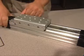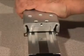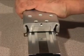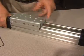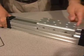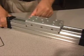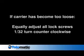The carrier should also be loose enough to be moved by hand over the entire length of the actuator. If after this process the carrier has become too loose, equally adjust all of the lock screws with a slight 1/32nd turn counterclockwise. A carrier that is adjusted too tight will increase the breakaway pressure required to move the carrier.